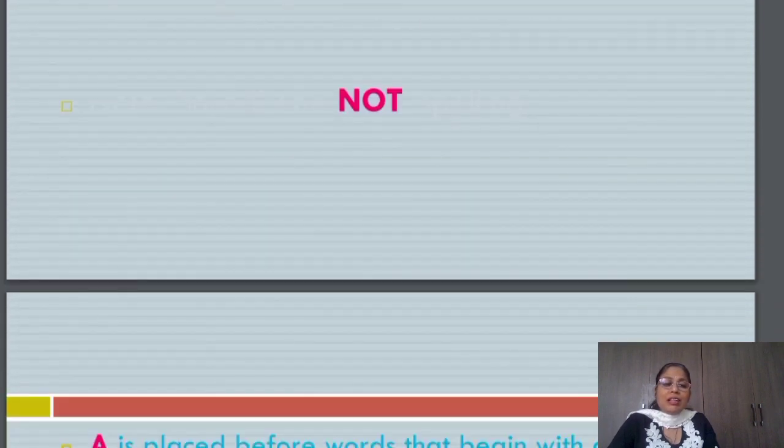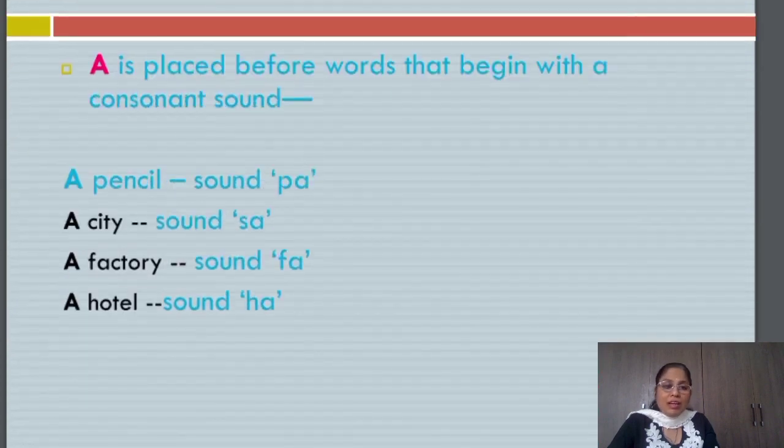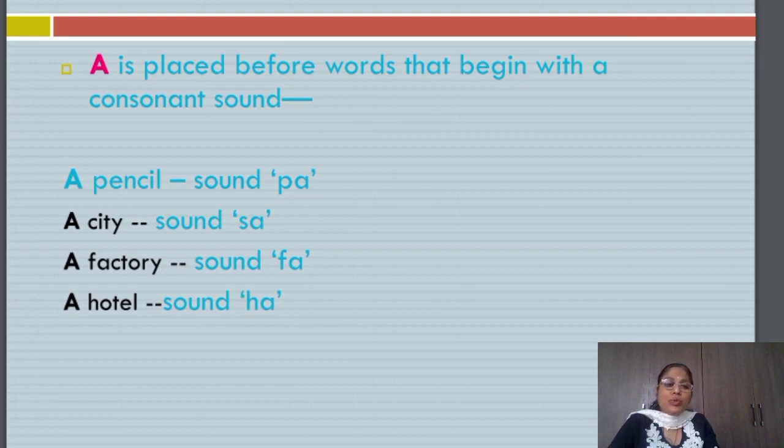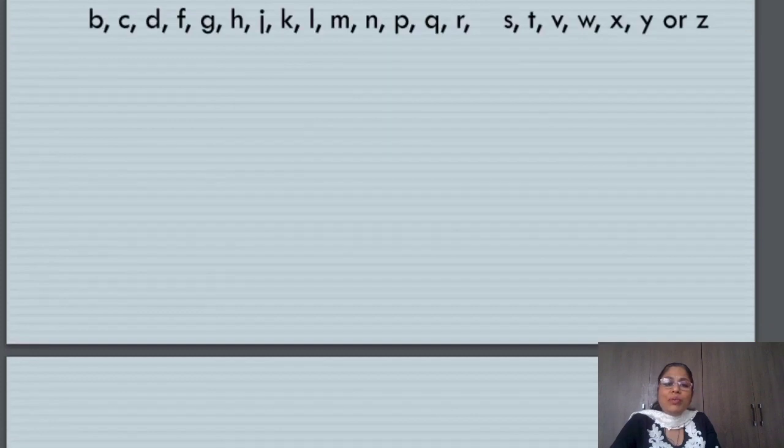Now I am going to teach you the difference of usage between a and an. The article a is placed before words that begin with a consonant sound. The technical difference between the usage of a and an is not the spelling but the sound. And this is one of the most commonly made mistakes by many people.